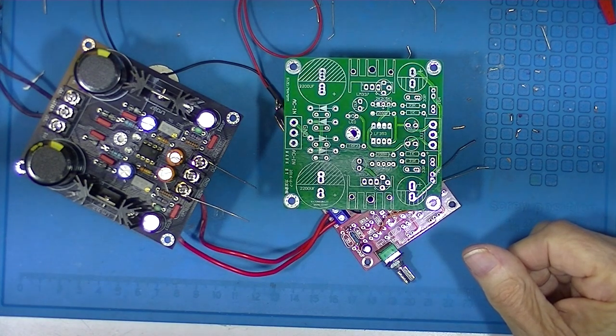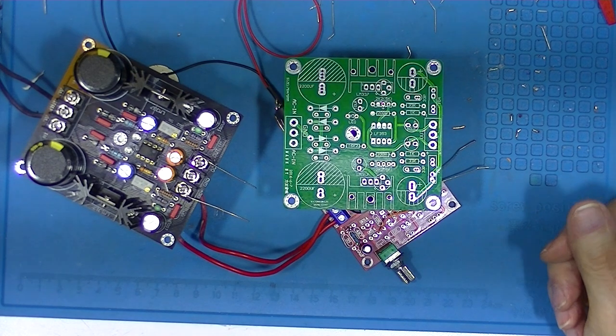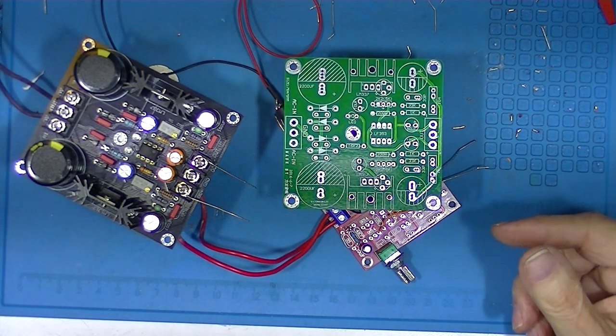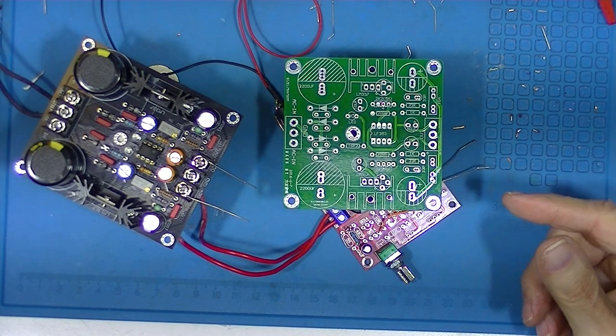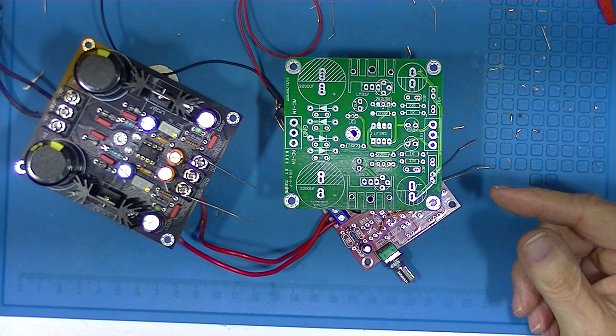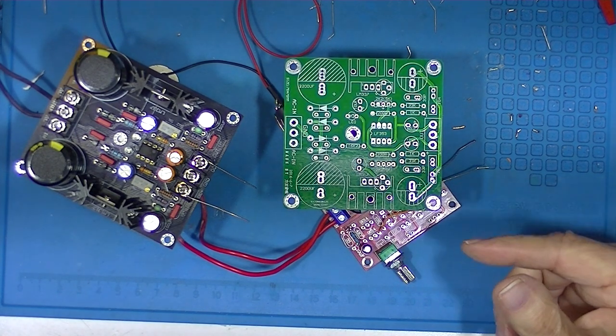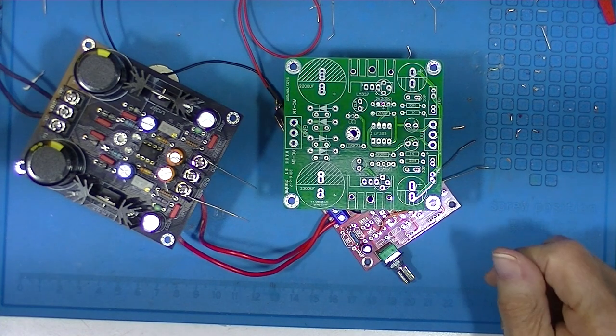A viewer suggested that the next power supply I build should be a tracking output - that is, a positive and negative output power supply with a common center connection, and the outputs, the positive and negative output, should track on a single potentiometer.